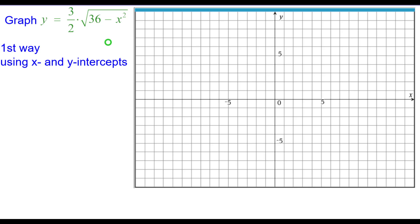So let's go ahead and graph this. The first way is going to be using x and y intercepts. So the x-intercepts occur when the y value is equal to zero, but we only need to concern ourselves with this expression because the three-halves will not make any difference there.